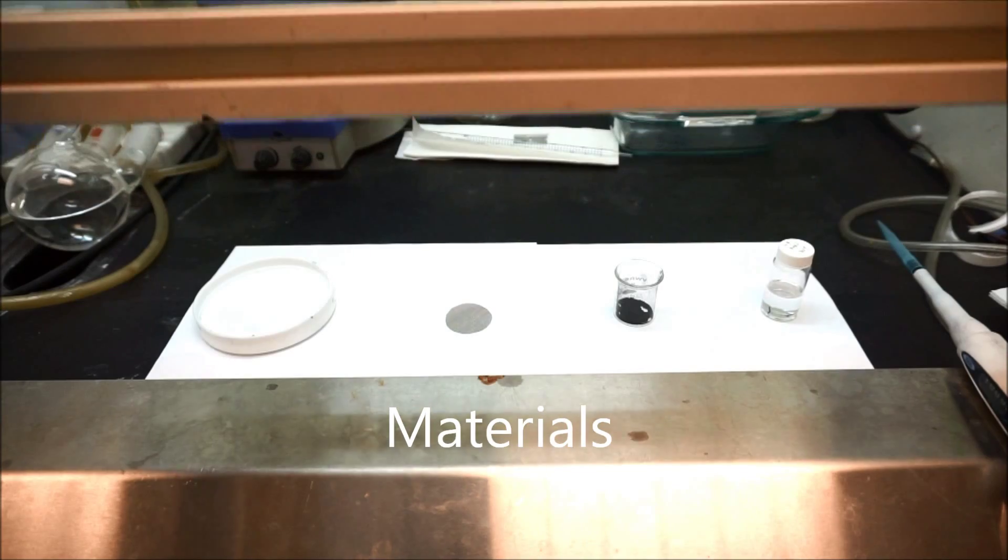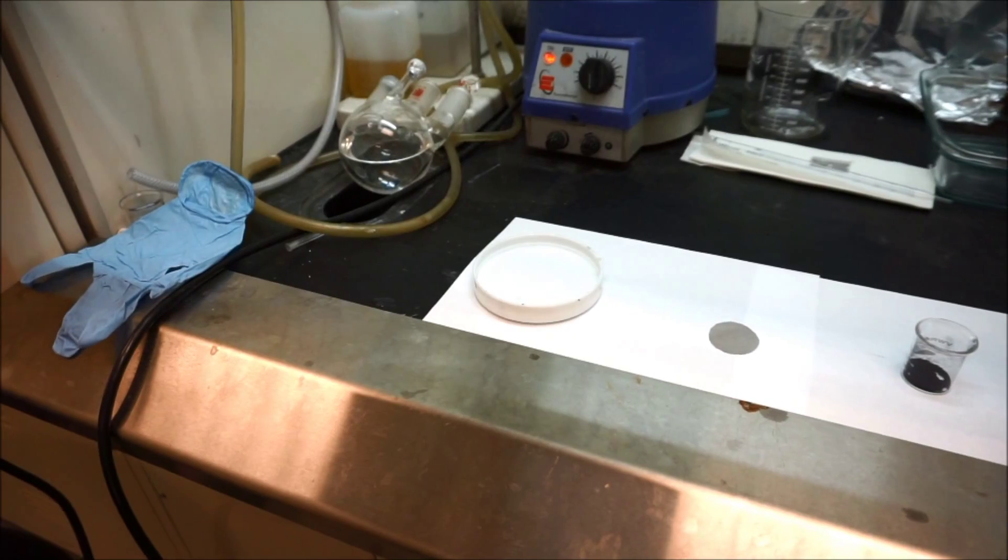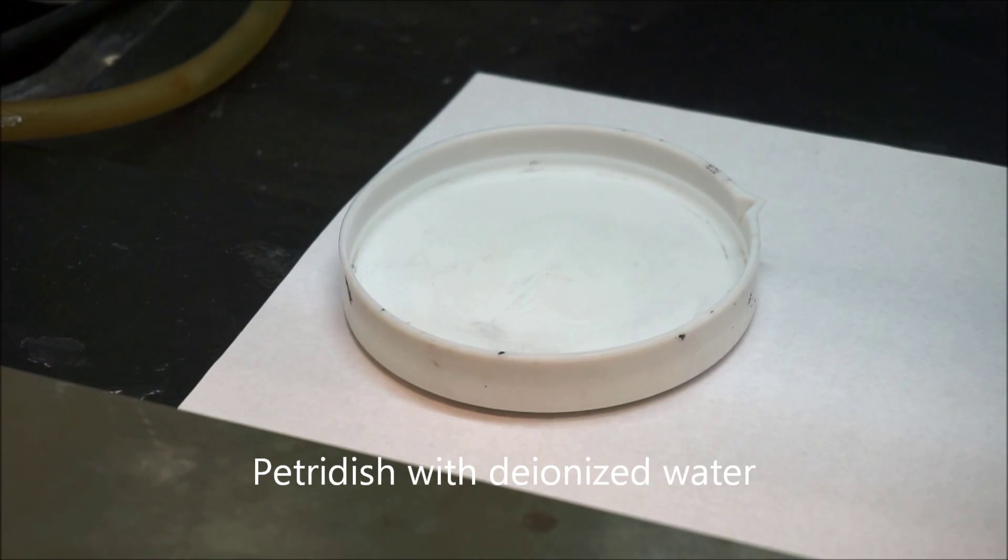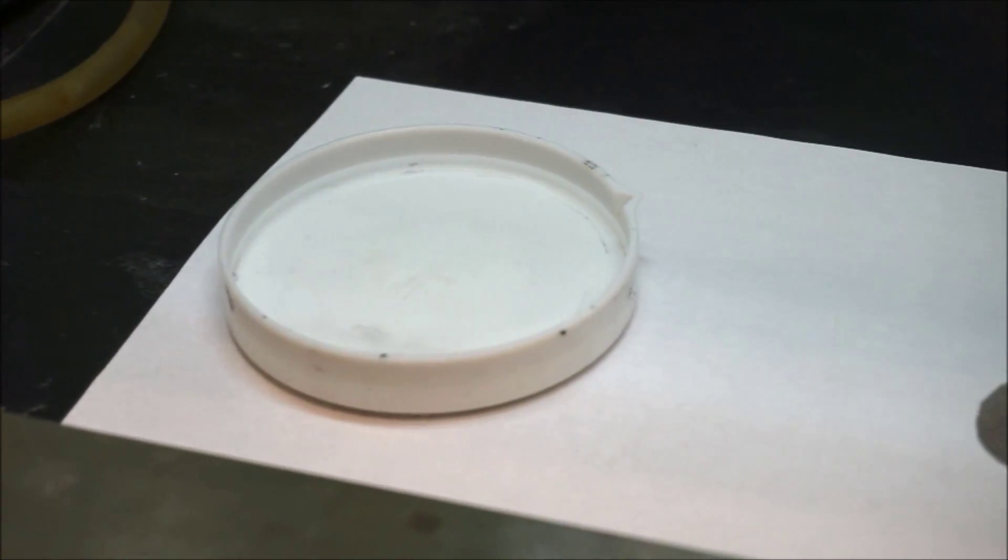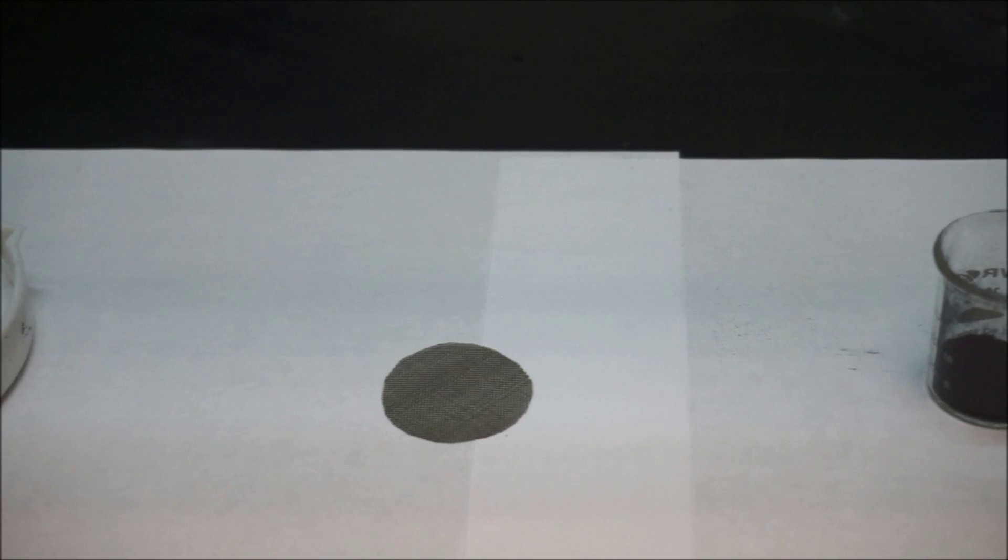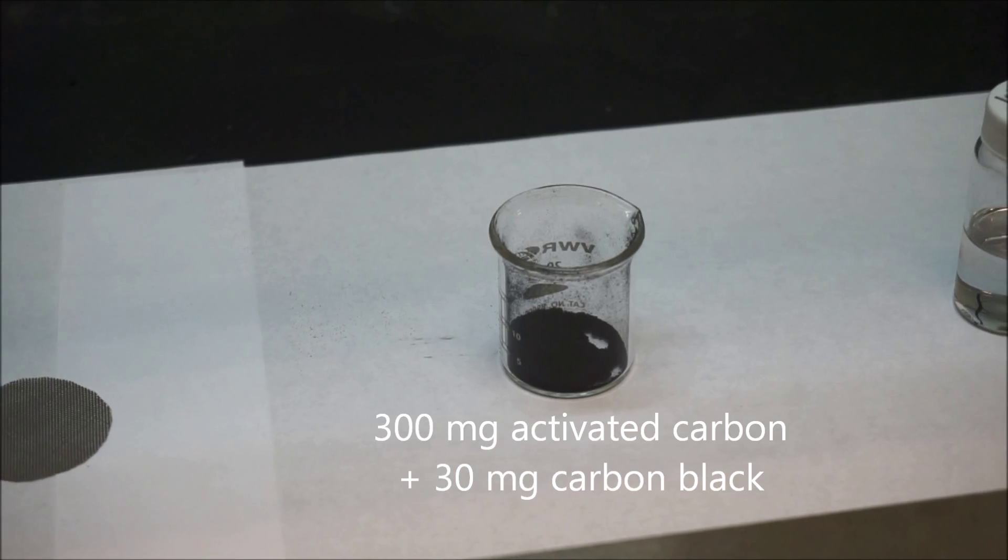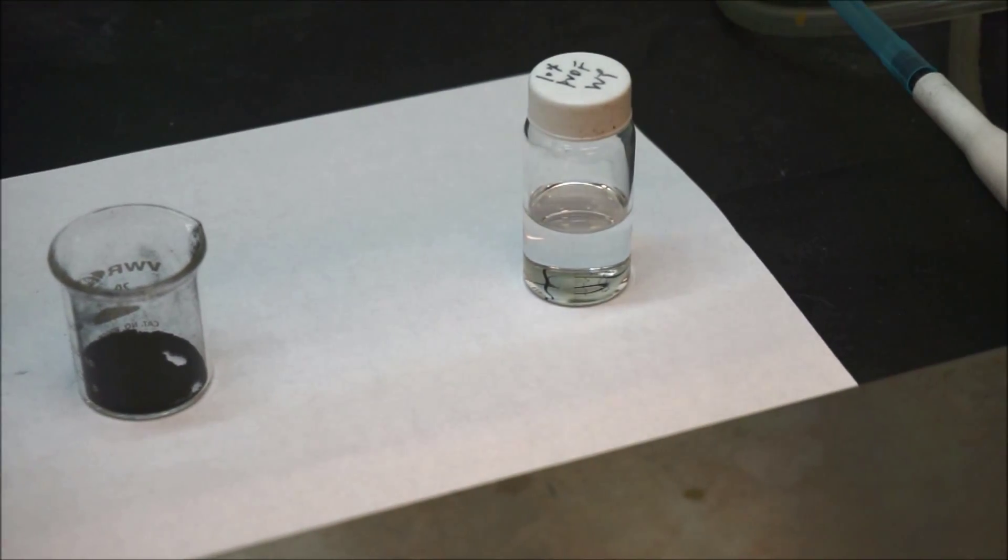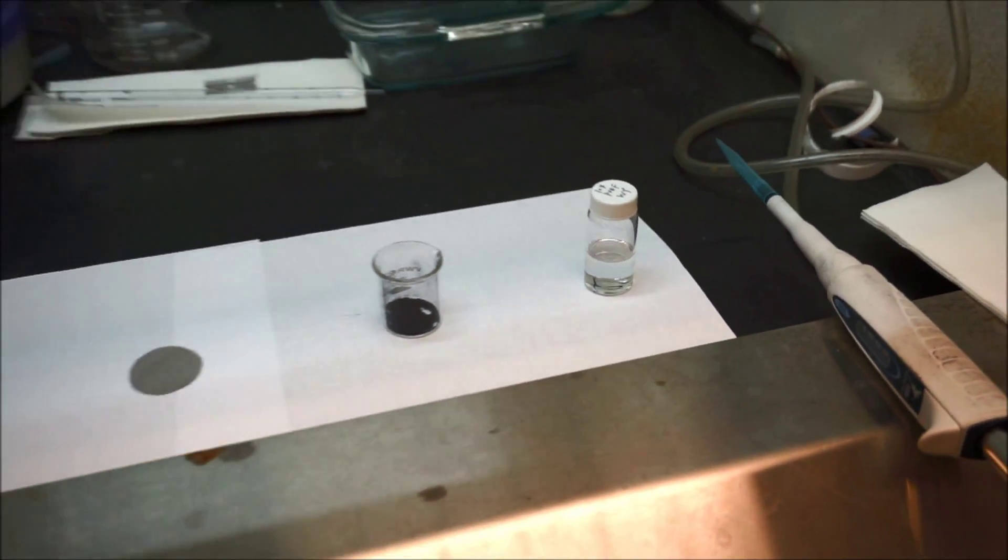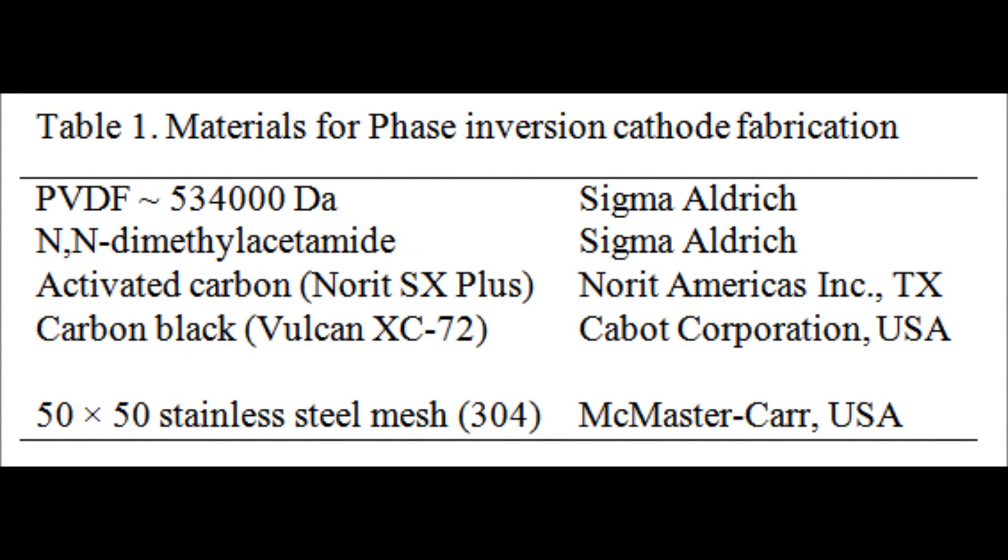So first let's take a look at the materials and equipment we need to use to make the active carbon air cathodes. The first one is the petri dish filled with deionized water, and the second one is the 50 by 50 stainless steel mesh as a current collector. And also we need active carbon powder and carbon black powder. In this case we use 10% PVDF solution as the binder. Here is a table showing the chemicals and manufacturers.